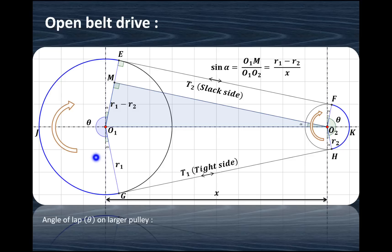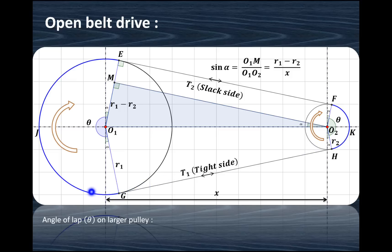In this particular case, when the driver pulley rotates in the clockwise direction, the driven pulley also rotates in the clockwise direction. The power is transmitted from this driver pulley to the driven pulley due to the firm frictional grip between the belt and the pulley.